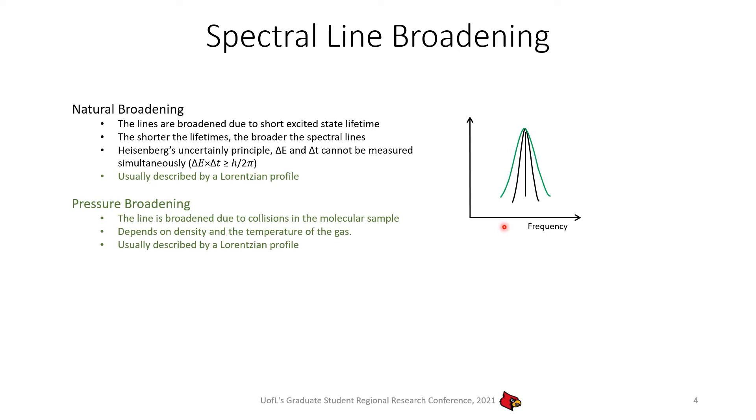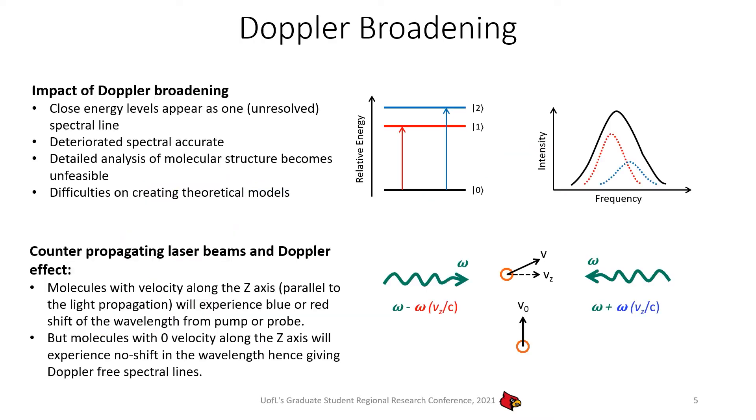Finally, we have Doppler broadening. This broadening happens due to the velocity distribution of molecules. It depends on the frequency, mass, and temperature. And here, it's usually described by a Gaussian profile. In our experiment, we try to get rid of Doppler broadening because Doppler broadening is prominent over pressure broadening and natural broadening.